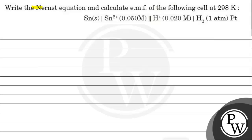Hello guys, let's read this question. Write the Nernst equation and calculate EMF of the cell at 298 Kelvin. We have given Sn in solid state, Sn2+ with concentration 0.050 molar, H+ with concentration 0.020 molar, H2 at 1 atm pressure, and Pt which is platinum.